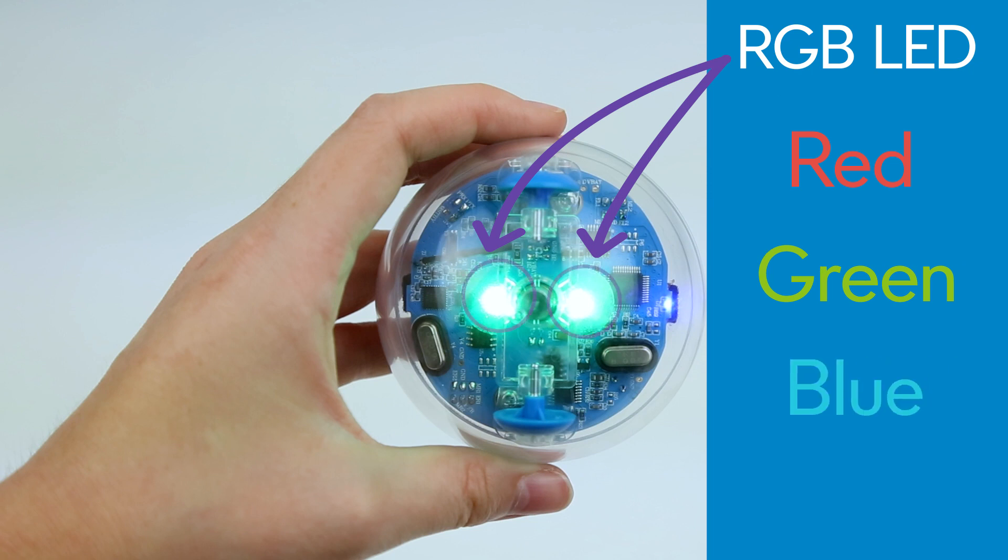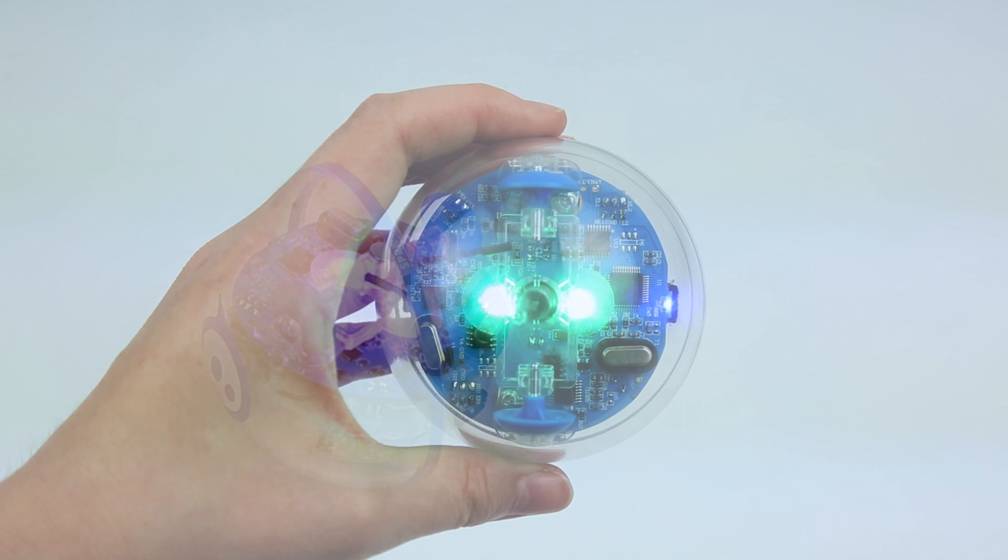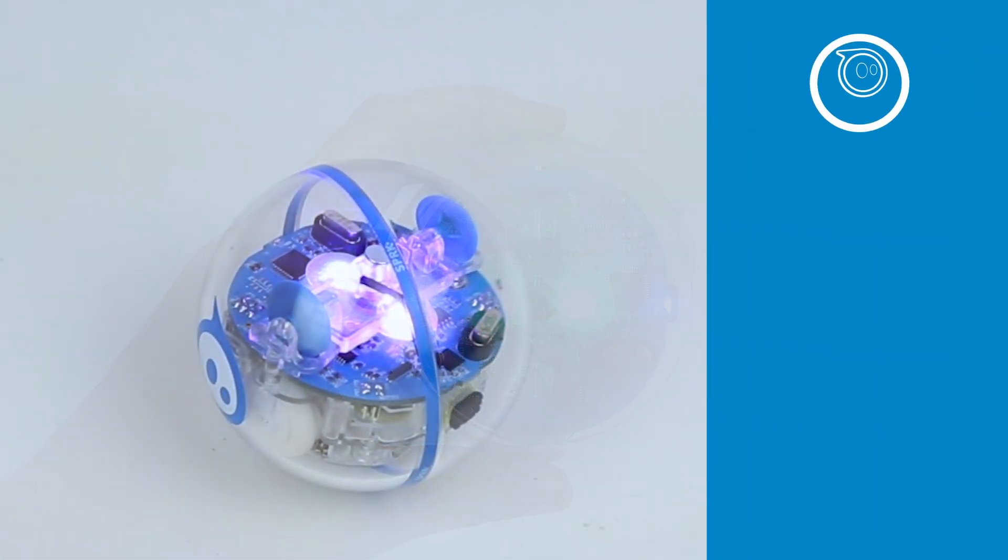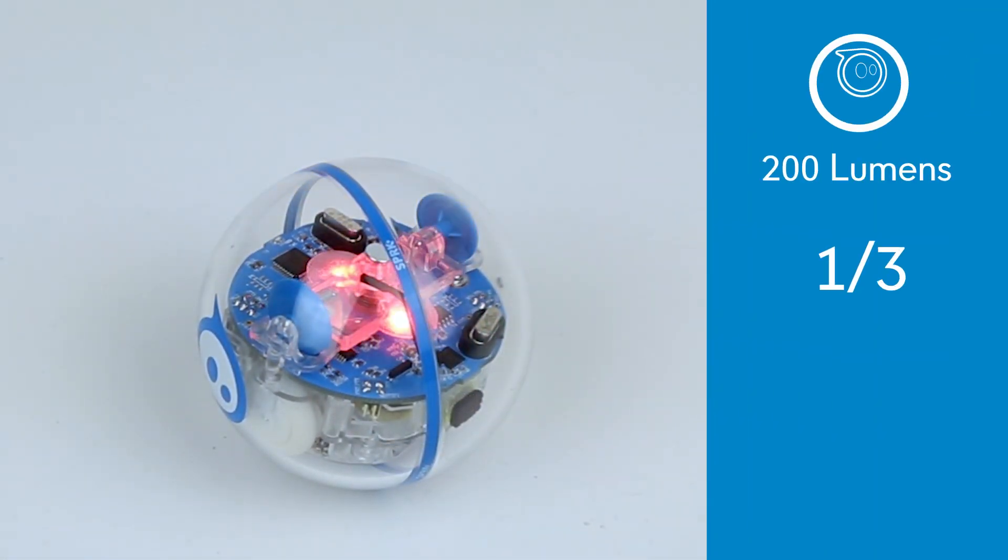Each LED has an opaque diffuser above them to spread the light and make Sphero glow to produce almost any color. At full brightness these main LEDs output 200 lumens of light, about one third that of a 60 watt light bulb.